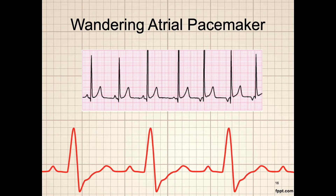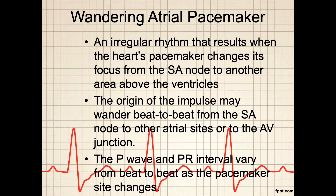This strip gives us an example of a wandering atrial pacemaker. Notice the different configurations of the P-wave on this strip. In some cases, such as on the left side, they are upward deflecting, while as you get to the right, they start to deflect downward. The wandering atrial pacemaker is an irregular rhythm that results when the heart's pacemaker changes its focus from the SA node to another area above the ventricles. The origin of the impulse may wander beat-to-beat from the SA node to other atrial sites or to the AV junction.